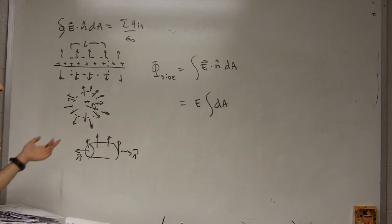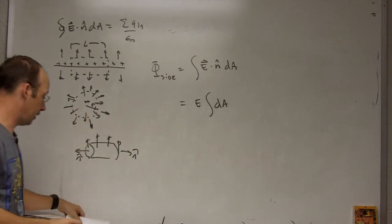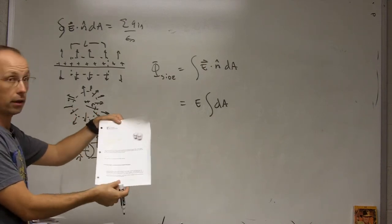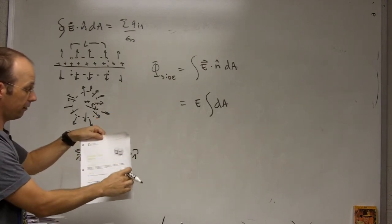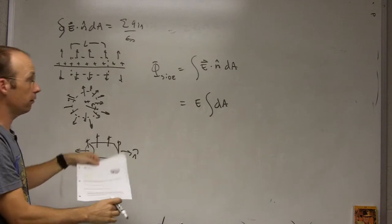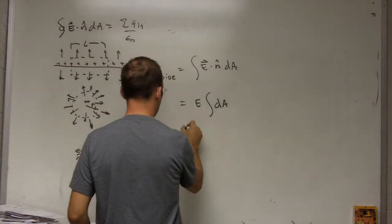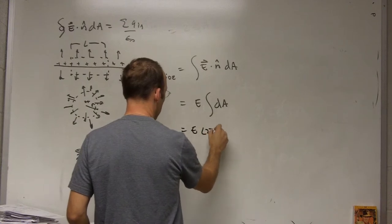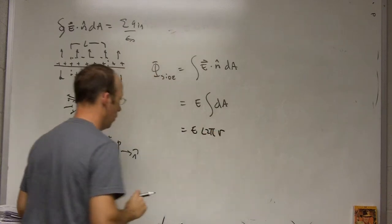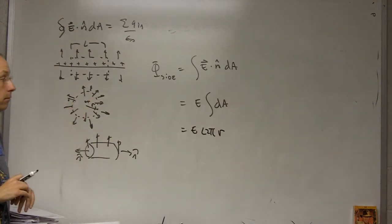Now I just have to find the area of that side and that side if you unroll it is a rectangle. So it has a length l and this is the circumference of the circle. So this is just going to be E times l times 2πr where r is just the radius of that cylinder. So that's the flux.